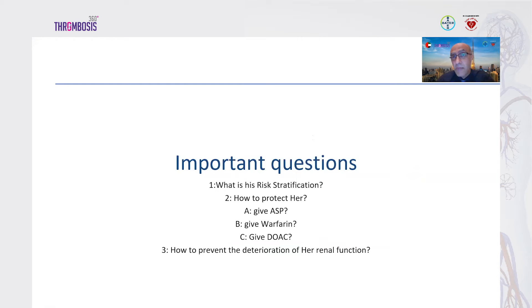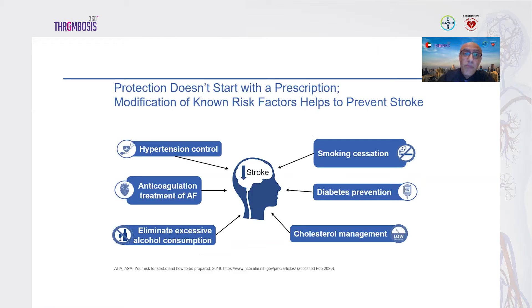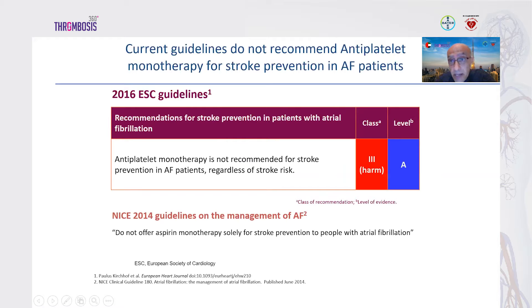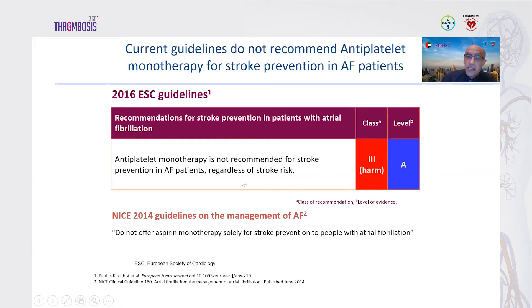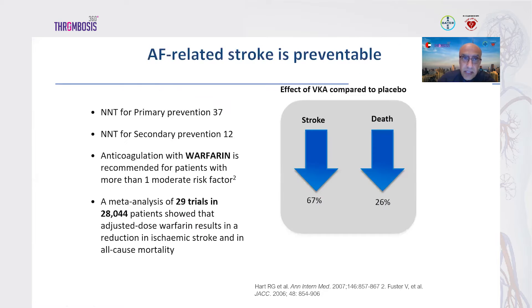Management involves modification of associated cardiovascular comorbidities: controlling blood pressure, cholesterol management, diabetes prevention, smoking cessation, and anticoagulation for AF. Some physicians consider aspirin — but this is absolutely wrong and obsolete. Since 2016 guidelines, antiplatelet monotherapy is not recommended for stroke prevention in AF regardless of stroke risk. The NICE guideline also does not recommend aspirin monotherapy for stroke prevention in AF patients.